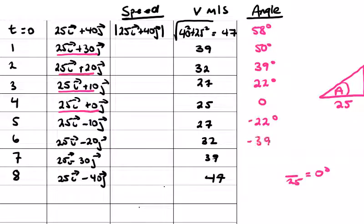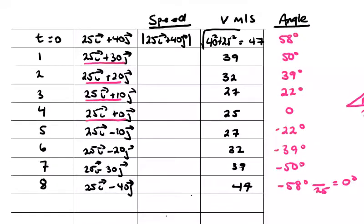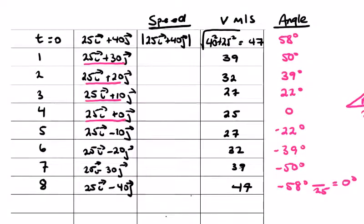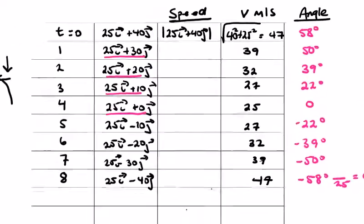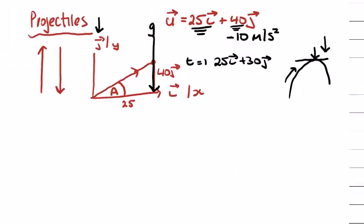Minus 39 degrees, minus 50 degrees, and then it should strike at a similar angle, minus 58 degrees at impact. So this is how to get the speed at any time, the angle at any time, and we'll have a look at a couple of more things here with the range and the max height.